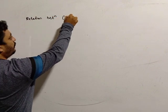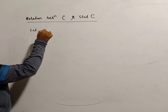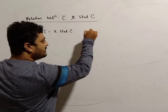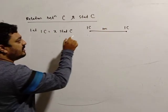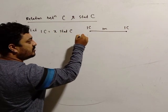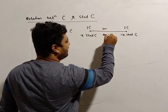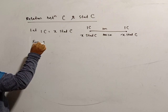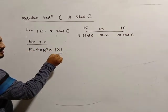First, find the relation between Coulomb and stat-Coulomb. Let 1 Coulomb equal to x stat-Coulomb. Now, consider two charges, each of 1 Coulomb, separated at a distance of 1 meter. As per our prediction, 1 Coulomb equals x stat-Coulomb, so instead of 1 Coulomb we can write x stat-Coulomb in CGS, and 1 meter as 100 centimeters. For SI, force will be 9 × 10⁹ × 1 × 1 / 1².